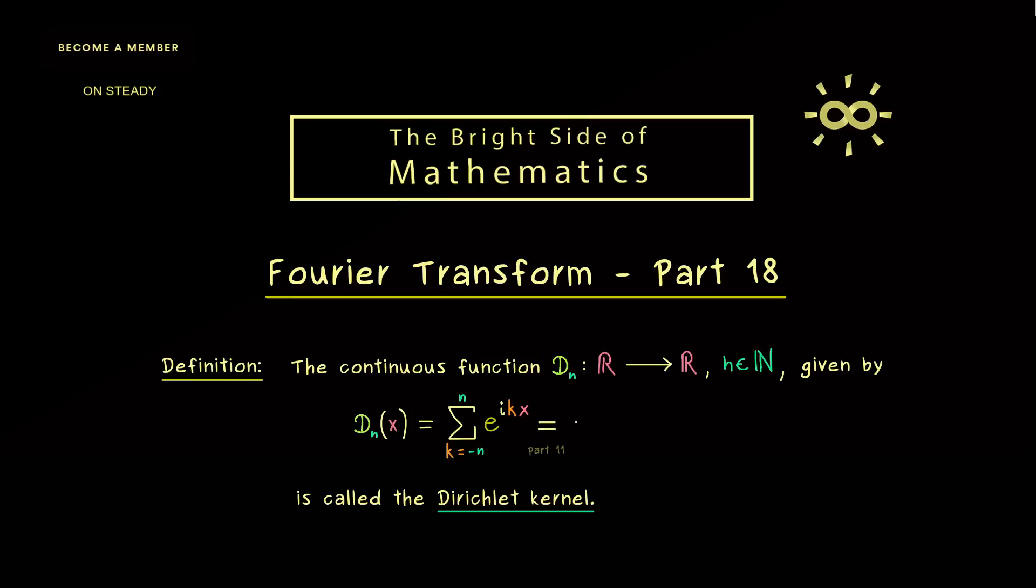There we have seen that we can write this whole sum also with cosine functions. Namely, it's the constant 1 plus 2 times a sum of cosine functions. And with that representation, you immediately see that the outcome is a real number again. And in addition to that, we can also reformulate it to get an expression without any sum in it.